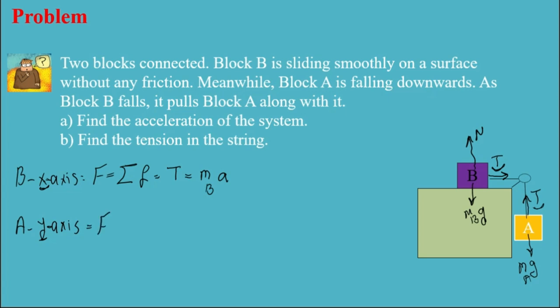So again, the total F equals sum of F. This is for B, this is for A. It's in x axis, this is in y axis. What I have here is T minus m_A g equals m_A times acceleration.